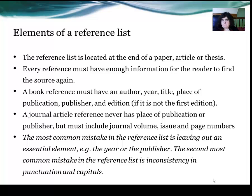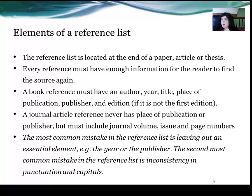Is it the third edition? Is it the fifth edition? Importantly, the title of a book is in italics, and it is letter-capitalised — each word of the title has its first letter capitalised. A journal reference never has place of publication or publisher, but must include the journal volume, the issue number in brackets after the volume number, and then page numbers — either a single page (p.) or a page range (pp.41–72).